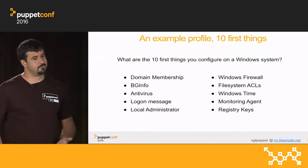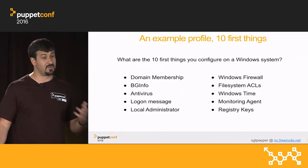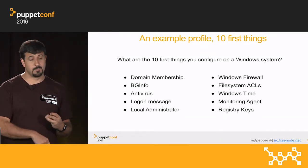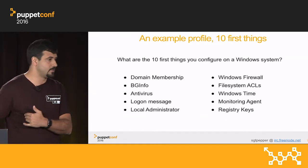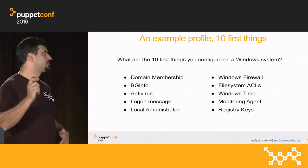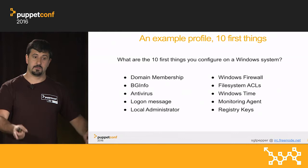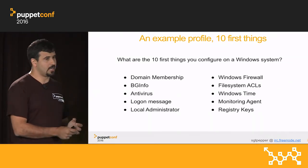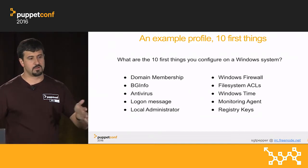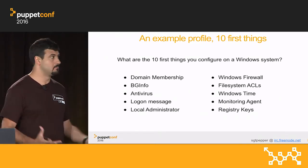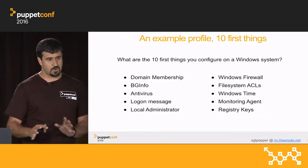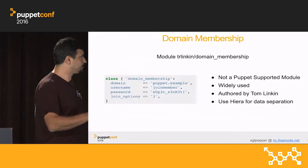For instance: domain membership — most systems would be part of a domain; some systems would be standalone and if they're standalone, you actually need more Puppet, not less. BGinfo, an antivirus, a login message — yes, if you're on a domain you may be putting that on the domain controller or in SCCM, but someone may go and remove that registry key. Local administration, firewall rules, ACLs, Windows Time — which if you're on a domain is kind of managed by Active Directory, but things can go wrong. Things like a monitoring agent, registry keys.